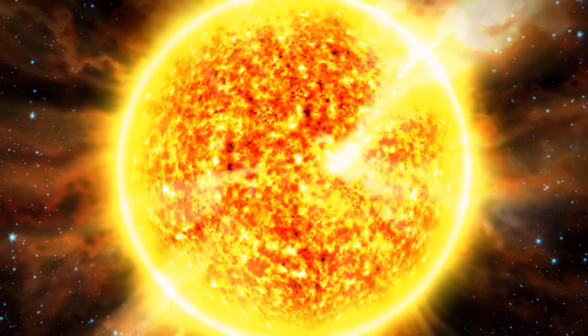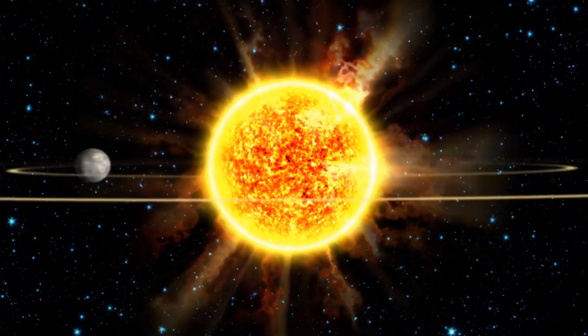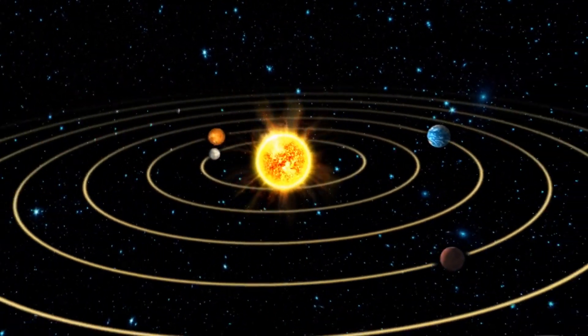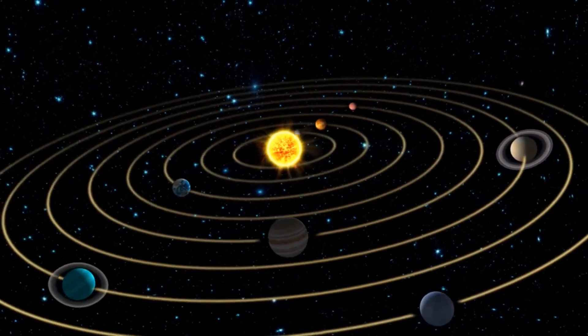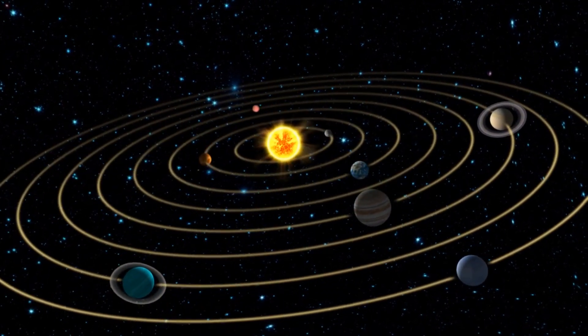Looking ahead, solar activity is expected to be relatively low, with a possibility of M-class flares and a slight chance of X-class flares occurring between the dates of 02-04 July.